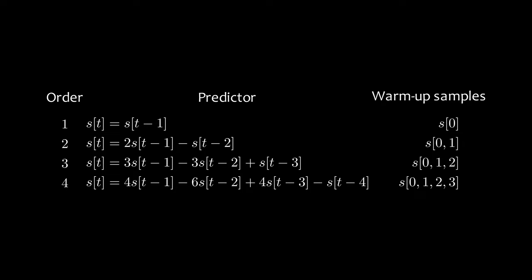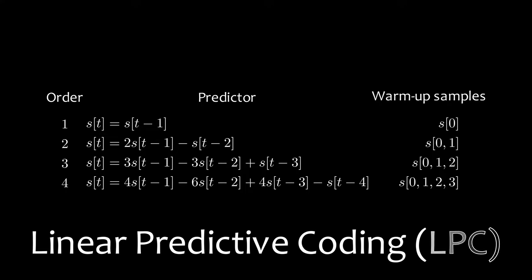Not only is this extremely cheap to compute, it's also super space efficient. Because there's only one predictor per order, we just store the order instead of the coefficients themselves, and at the same time, the order tells us how many warm-up samples there are. What we're doing here is encoding samples by predicting what the next sample will be, based on a linear combination of the previous samples. That's why we call it linear predictive coding.